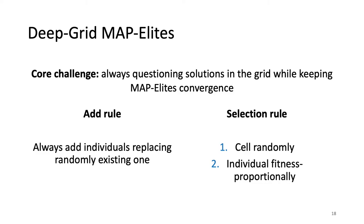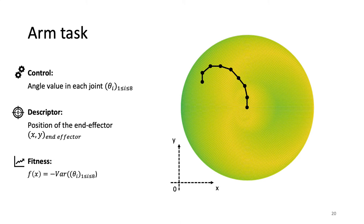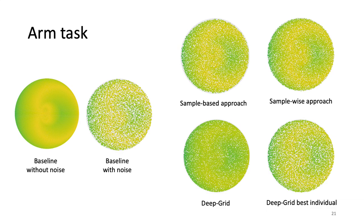We compare this approach on different tasks. The first is an 8-DOF arm task in which you control the arm and try to reach all possible XY positions with the end of the arm while minimizing variance in the joint values. You have an example of the type of archive you can get on the right. To compare the algorithms, we run each one and at the end re-evaluate all cells 50 times to obtain an approximation of the ground truth of the fitness and descriptor of each individual, then replace them where they truly belong.